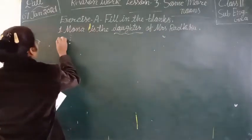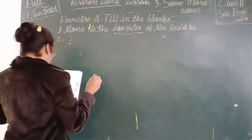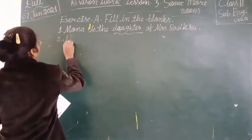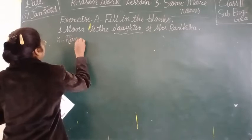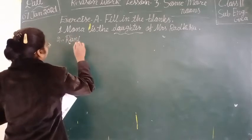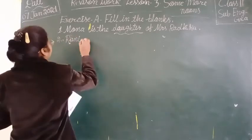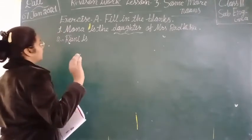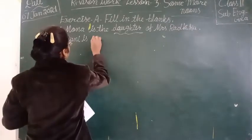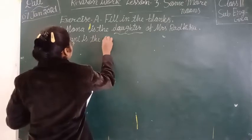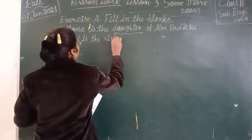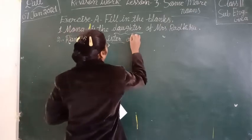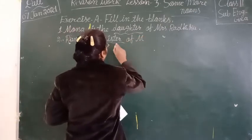Next, number two. Rani is the blank of Mona. Rani bhi ek name hai aur yeh girl hai, aur Mona bhi ek girl hai. Toh Rani, Mona ke kya lagti hai? Rani is the sister of Mona. Yahan par sister.